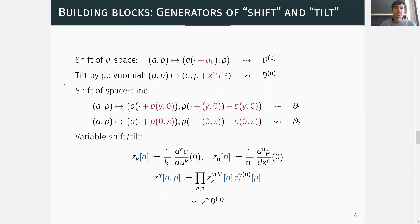Doing then the construction of the generator for the shift of u-space and the tilt by a polynomial again, but this time the shift parameter and the tilt parameters are allowed to depend on the pair (A,P), gives rise to the infinitesimal generator ζ_γ d^n, where we now also include here n = 0.